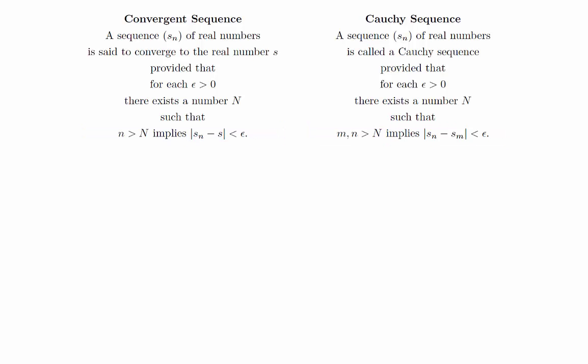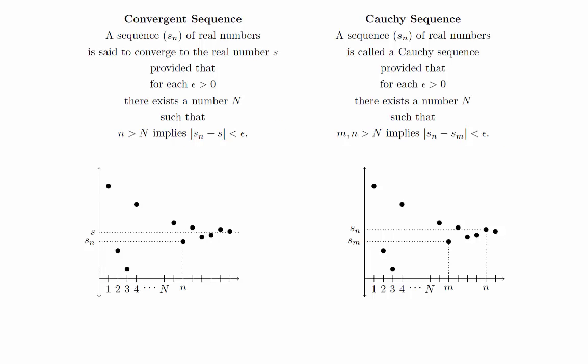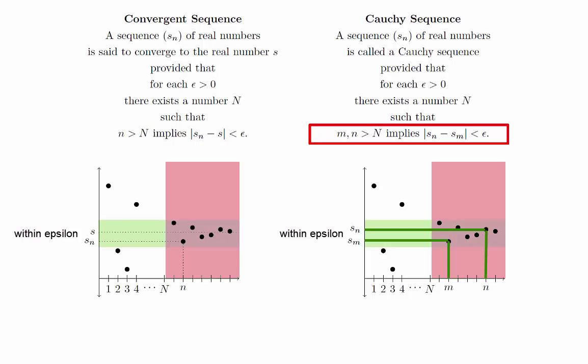Let's take a look at a couple pictures to make a comparison. The condition for a convergent sequence is that all terms beyond a certain point are close to the limit. The condition for a Cauchy sequence is that all terms beyond a certain point are close to each other.